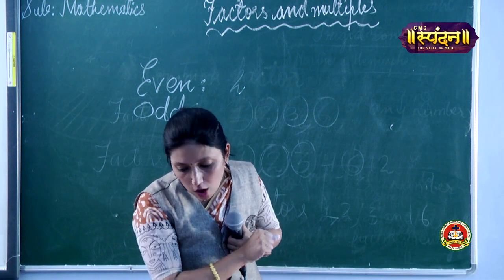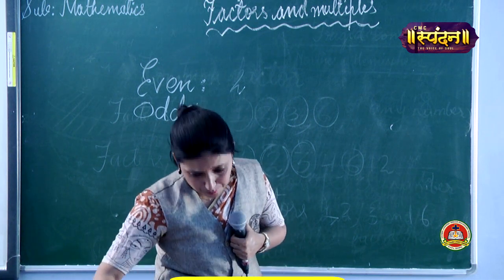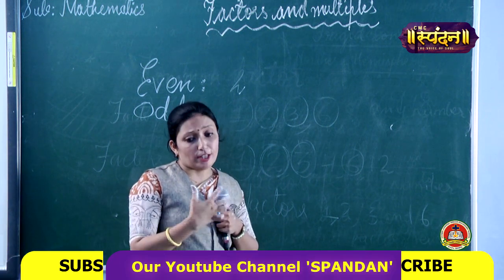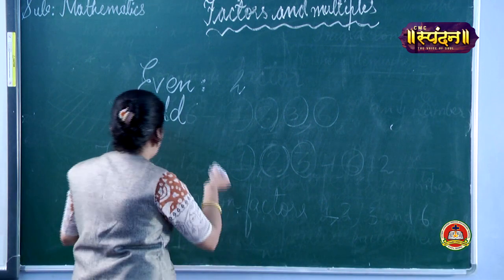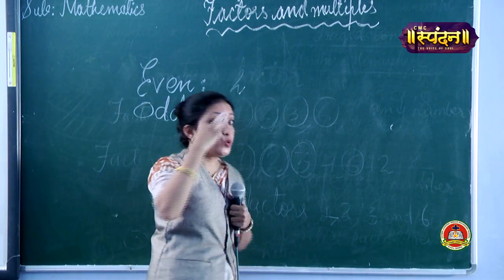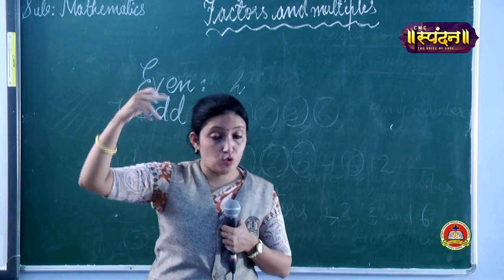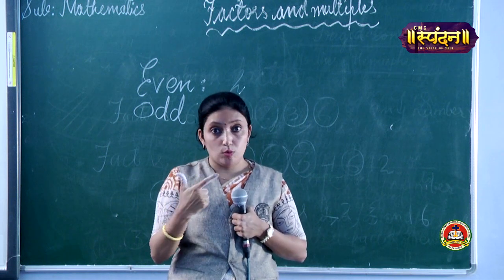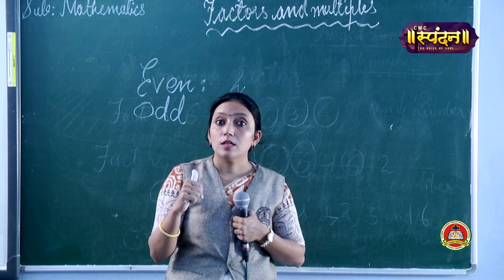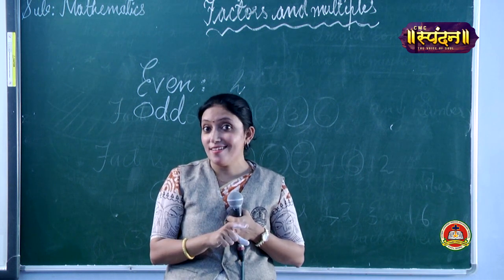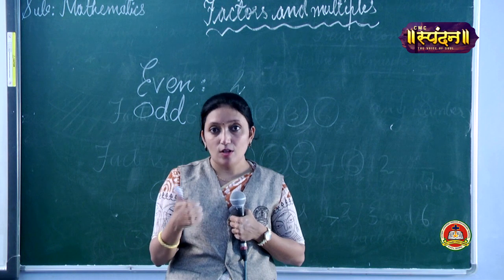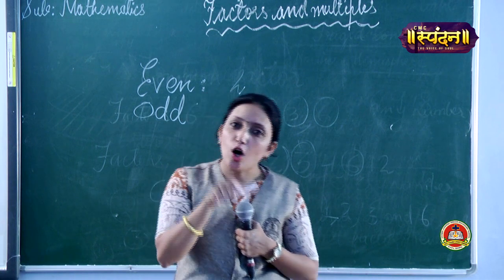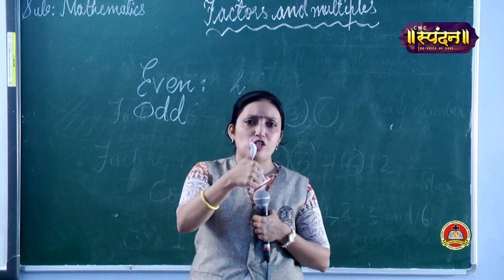This topic is given on page number 135 of your book. Now, to identify even numbers: if the ones place digit is 0, 2, 4, 6, or 8, the number is even. Small numbers like 2, 4, 6, 8, 10, 12 are easy. But for large numbers like 122, you check the last digit. If the last digit is 0, 2, 4, 6, or 8, it is an even number.